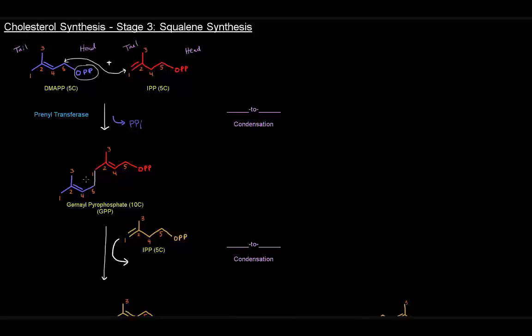So now we have this molecule here which is geranyl pyrophosphate, which is ten carbons long. Each of these five carbon units was linked to make this. So this condensation reaction here, we connected the head unit to the tail unit, so this is a head to tail condensation.